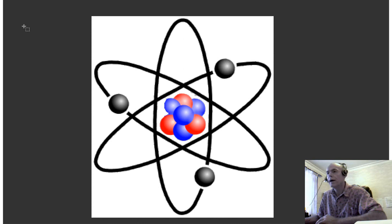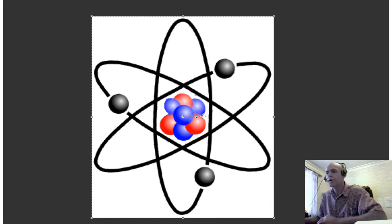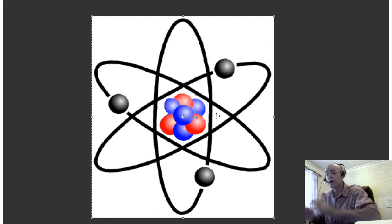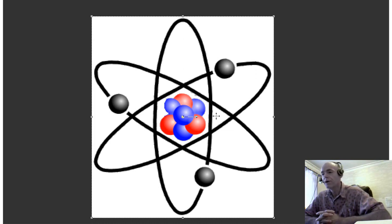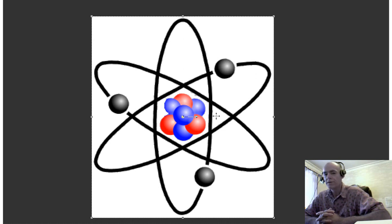The atom by itself is neutral, because for every electron which has a negative charge there is a proton which has a positive charge, and those two charges cancel out. So if you have one electron and one proton together, you have no charge at all. Most atoms in their normal state are neutral. It's only when we start pulling away electrons from atoms that we create electrical pressure called voltage.